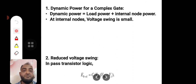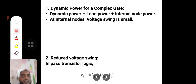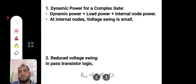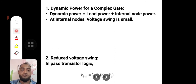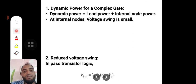In switching power dissipation, the first kind is the dynamic power for a complex gate. Dynamic power means instantaneously varying power, so dynamic power equals load power plus internal load power. At internal nodes, voltage swing is small — pass transistors cannot give a good high output. The high output of a pass transistor is V_DD minus V_t only, so you must consider load power plus internal load power, whose swing is reduced.